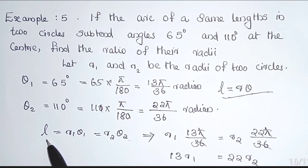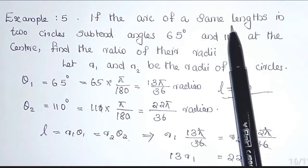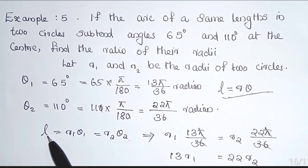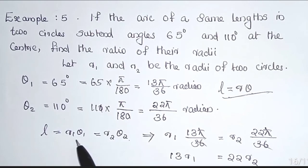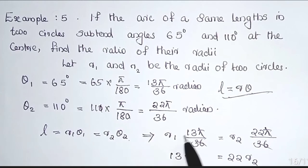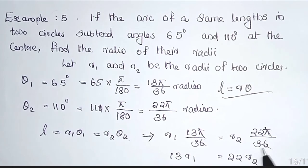l is equal to l, it's the same. If the arc of the same length, l is the same. So we can write that l = r₁θ₁ = r₂θ₂. That implies r₁(13π/36) = r₂(22π/36). We can cancel the same values on both sides.